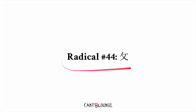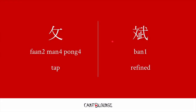Radical number 44: this is 文, I think. This is 反文旁, or the reverse 文 side, meaning tap. For example, this character 斌, which is pronounced 斌 and means refined. I think this is used a lot in names — it's a very good character to have.